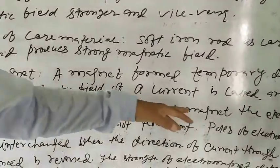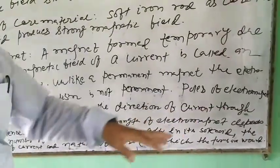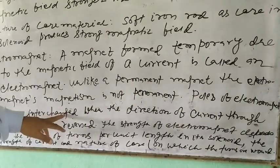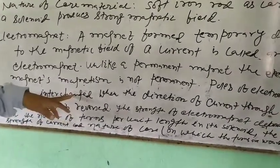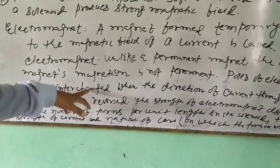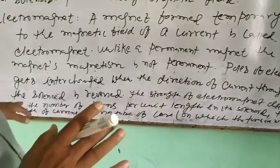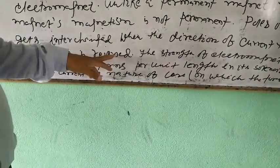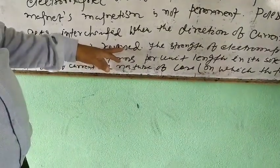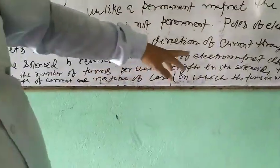Unlike a permanent magnet, the poles of an electromagnet are not fixed. The poles of an electromagnet get interchanged when the direction of current through the solenoid is reversed. When the current flows in one direction, the poles are of one type, and when the current is reversed, the poles of the electromagnet are also reversed.